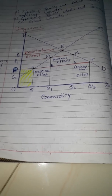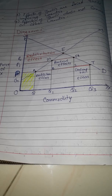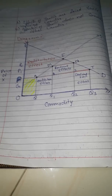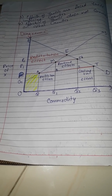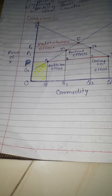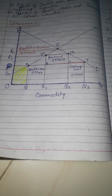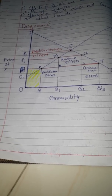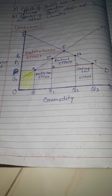To save domestic firms, the government always uses tariff to decrease imports. So after imports increase, to control that import the government imposes tariff. The tariff imposed is PP1, raising the price from OP to OP1.